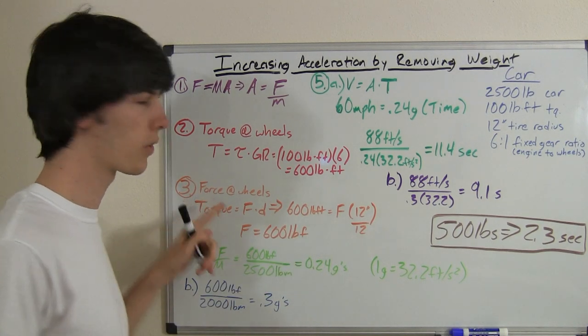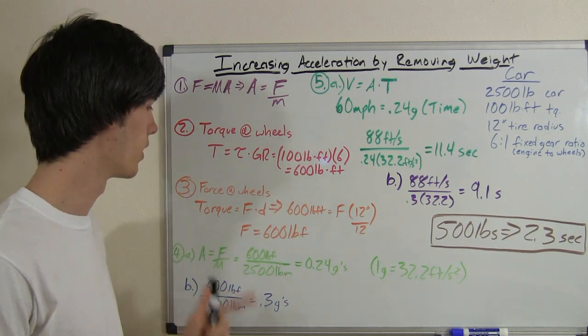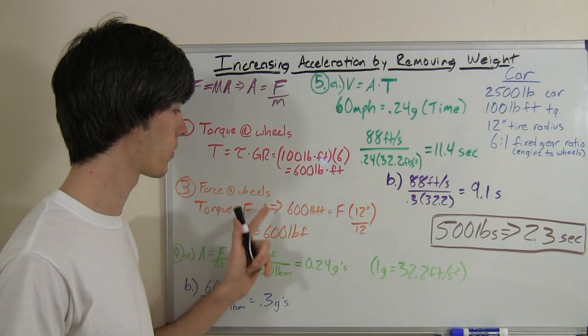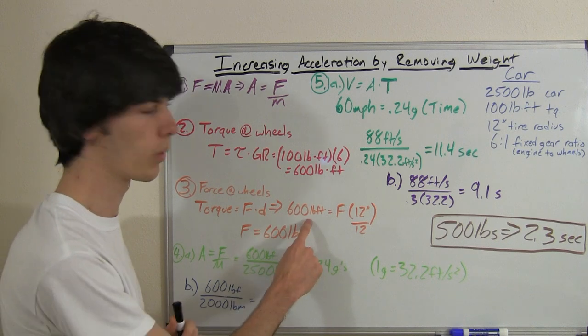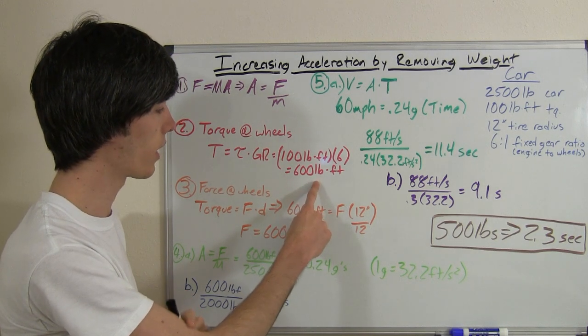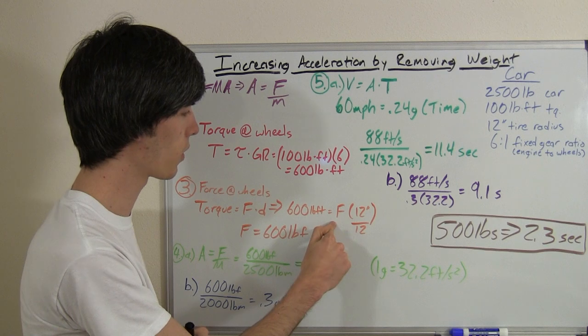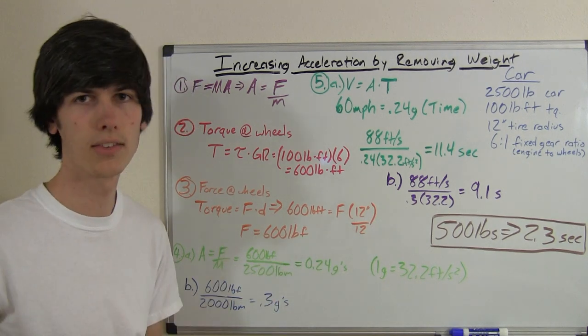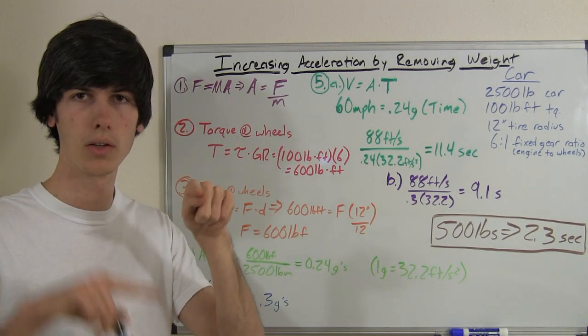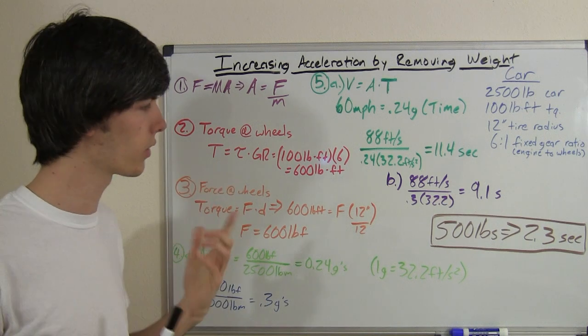So let's find the force that the wheels apply to the ground. Now we know that torque is equal to force times distance. So we have 600 pound feet of torque, as we've discovered right up here, and that's going to equal force times the distance. Now the distance is going to be the distance from the center of the wheel to the bottom of the wheel, the radius of the tire.